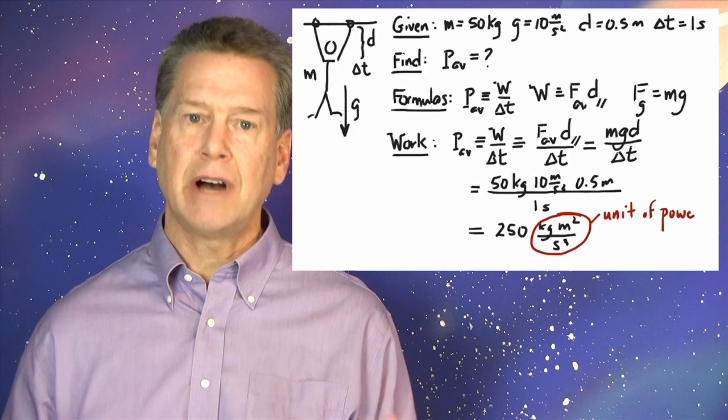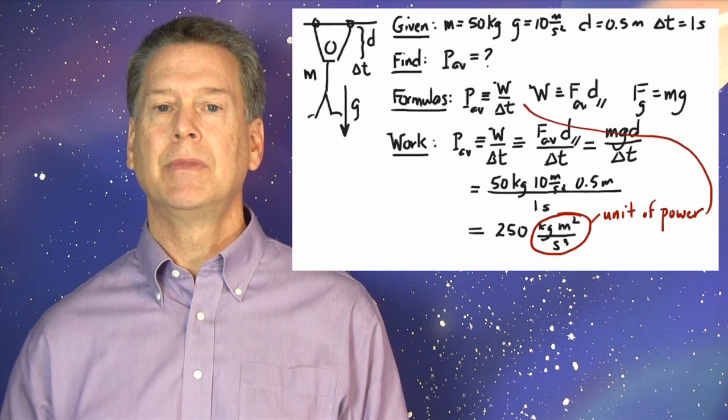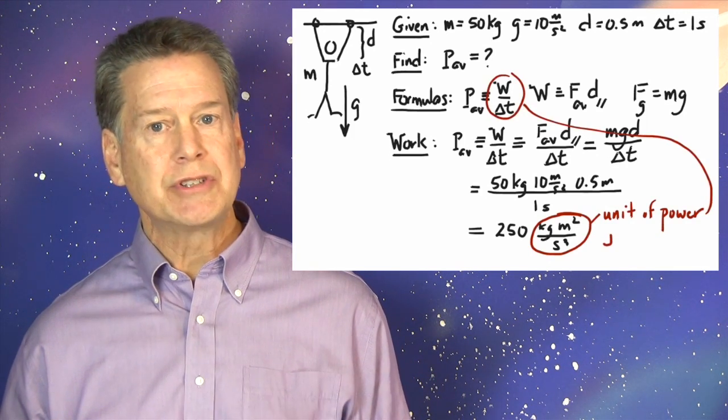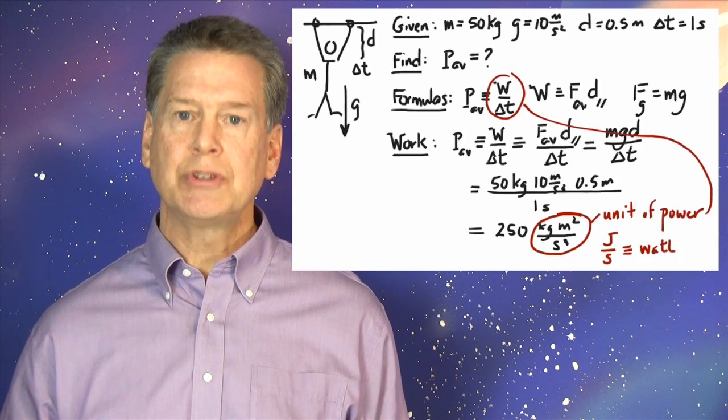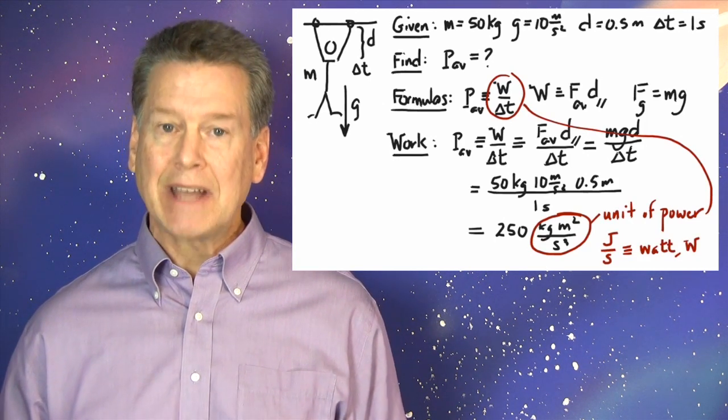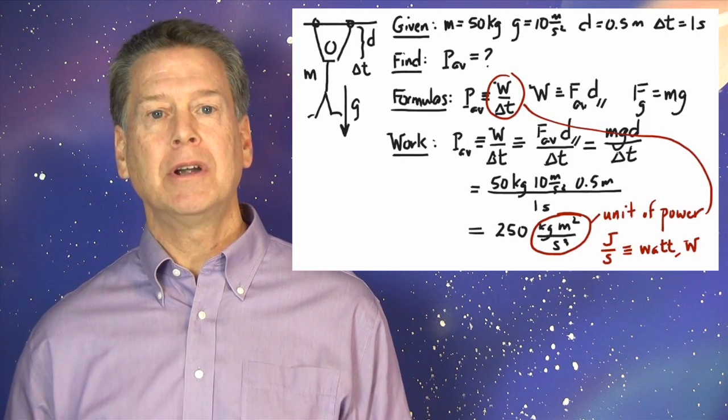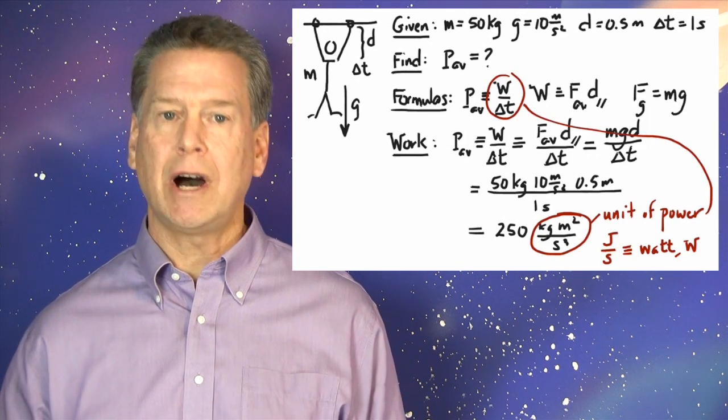This complex unit of power must, by the definition of power, be the unit of work divided by the unit of time. Work is measured in joules, and time in seconds. So power is measured in joules per second. That's called a Watt. Your pull-up power is about 250 watts.